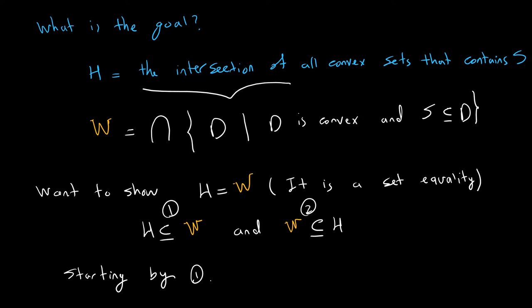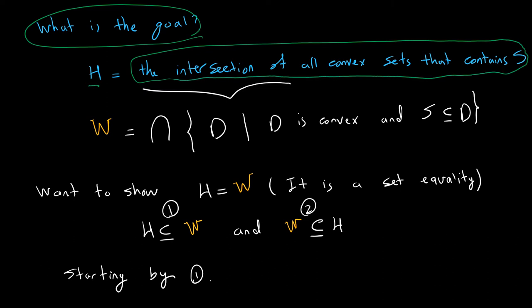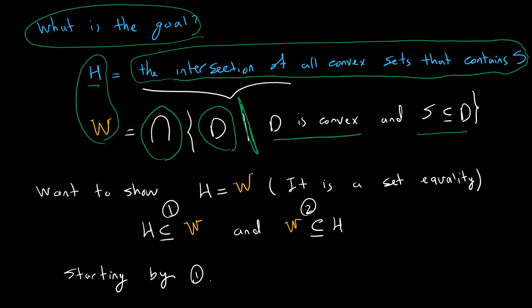Now let's see what we have to show. The goal is to show that H equals the intersection of all convex sets that contain S. Let me rewrite the mathematical notation for the right-hand side: we are saying the intersection of all sets C such that each set is convex and contains S — let's call this W. To show this set equality, we need to show that H is contained in W and W is contained in H.